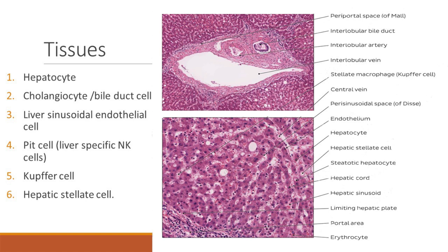Your hepatocytes have the function of production — that is synthesis and also detoxification. Your bile duct cells help in the movement of the bile. Your NK cells and Kupffer cells are the macrophages and they have the activity to fight with foreign antigens and antibodies. Your hepatic stellate cells also help with some amount of storage of vitamin A and other activities.